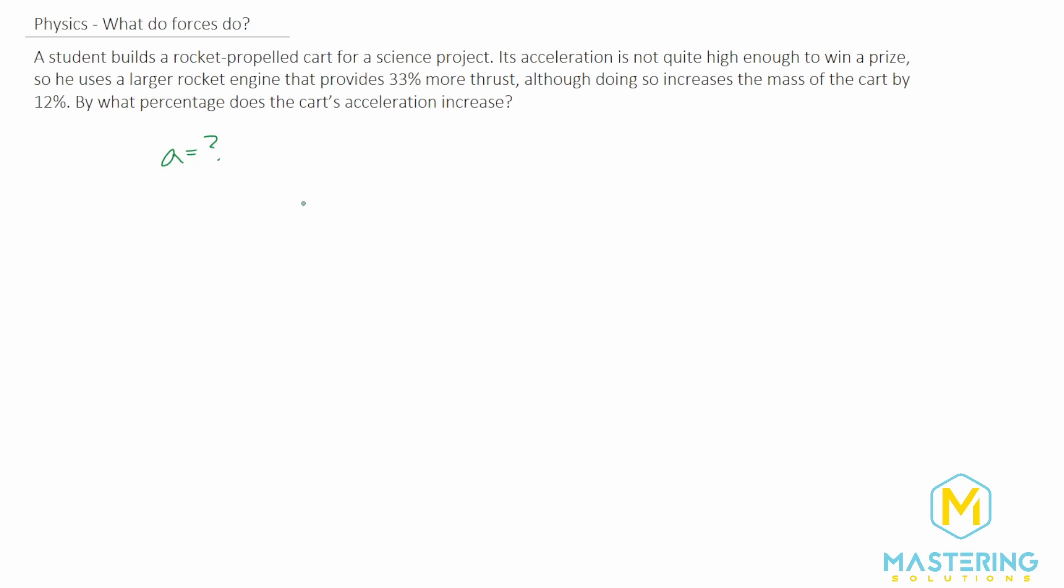And so we'll use the formula for force, which we know is mass times acceleration, but we want the acceleration so we'll divide both sides by mass. So what we end up with is acceleration is equal to force divided by the mass. Now this has come up in a lot of other problems so that's pretty straightforward right here.